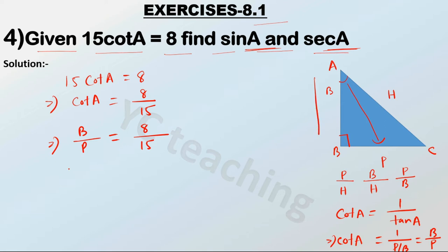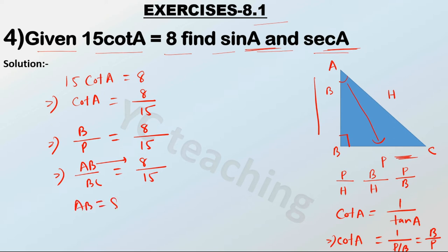So our base AB is equal to 8 and our perpendicular BC is equal to 15. AB by BC equals 8 by 15, so AB is 8 and BC is 15.